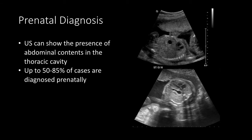Most of these patients — 50% to 85% — are diagnosed prenatally via ultrasound. This top picture shows a normal fetus with a properly developed diaphragm that separates abdominal contents from thoracic contents. You can see in the sagittal view there's a stomach bubble in the inferior part of the fetal trunk, but superior to that you see a heart and its chambers.